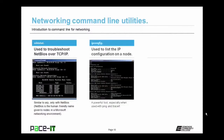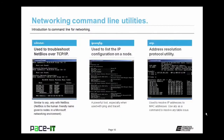I find the ipconfig command very useful when troubleshooting networking issues — it lists the IP configuration for a given node, and you can use it in conjunction with ping and tracert to determine if there is an IP address conflict. ARP — Address Resolution Protocol — is used to resolve IP addresses to MAC addresses, which is how a switch knows where to deliver a packet. Use ARP at the command line to resolve ARP table problems.